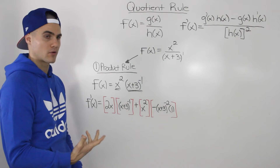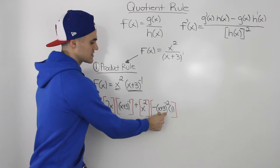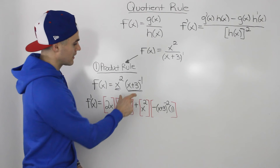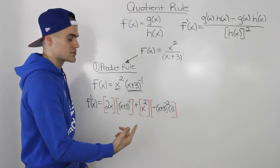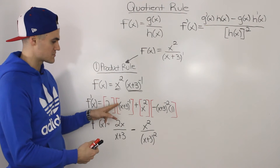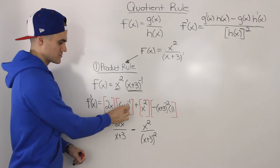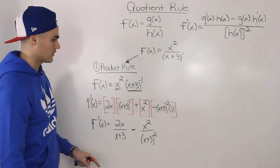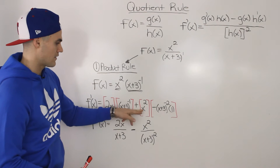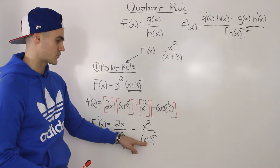On the second function, we apply the power of a function rule, since it's a function to a power. We bring the negative 1 down, keep the function inside the bracket the same, subtract 1 from the exponent to get negative 2, and multiply by the derivative of the inner function. The derivative of x plus 3 is just 1. Then we bring those negative exponent terms down to the denominator: 2x over x plus 3, minus x squared over x plus 3 squared.